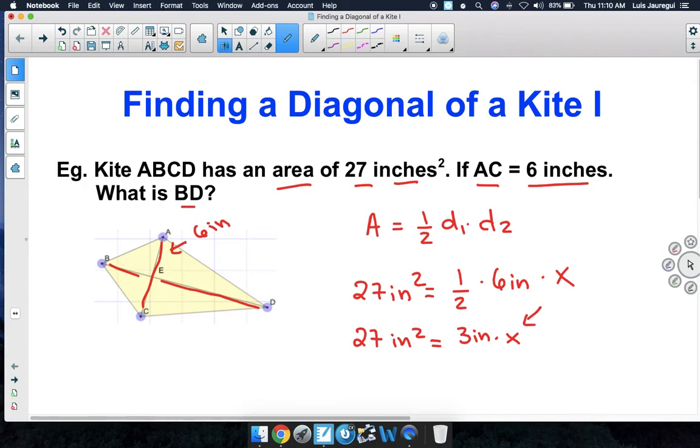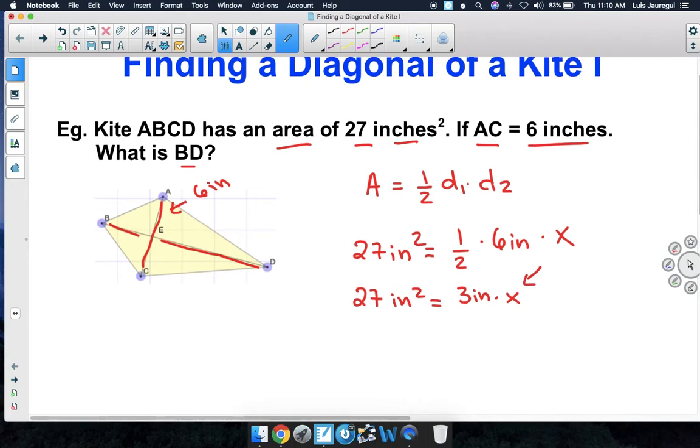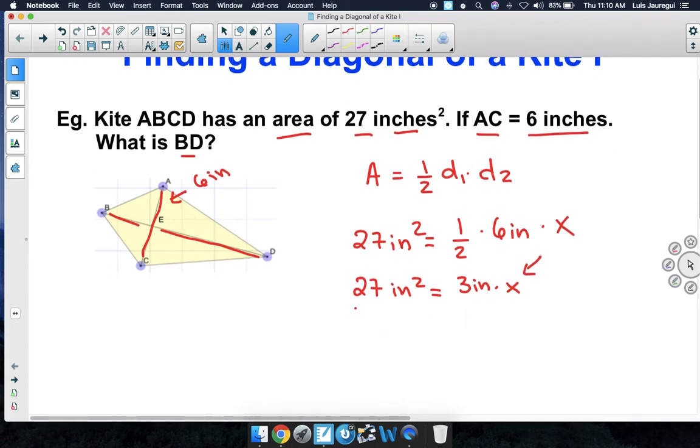Since our goal is to get the X by itself, we're going to divide both sides of the equation by 3 inches. Now, on the left-hand side of the equation, we have 27 divided by 3, which is 9, and inches squared divided by inches, which is inches. And on the right-hand side of the equation, we have 3 inches divided by 3 inches is 1, and 1 times X is simply X.